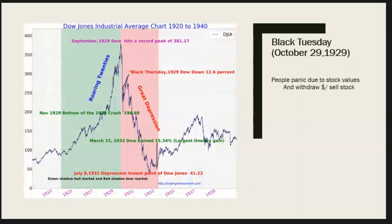On October 24, 1929, a sudden wave of selling stock took place as investors lost confidence that stock prices would go higher. The market recovered slightly over the next few trading days. But on October 29th, forevermore called Black Tuesday, the bottom dropped out of the stock market. Over 16 million shares were traded that day as panic swept across Wall Street. Day after day, prices continued to drop. By year's end, the overall value of stocks had dropped by $40 billion. The average share of stock was worth about half of its value before the great stock market crash.